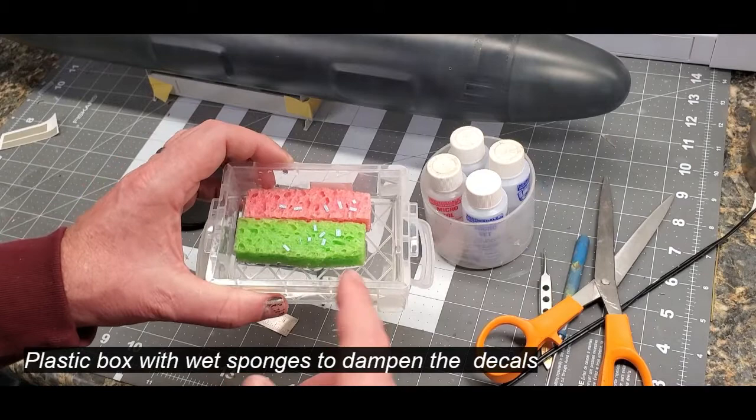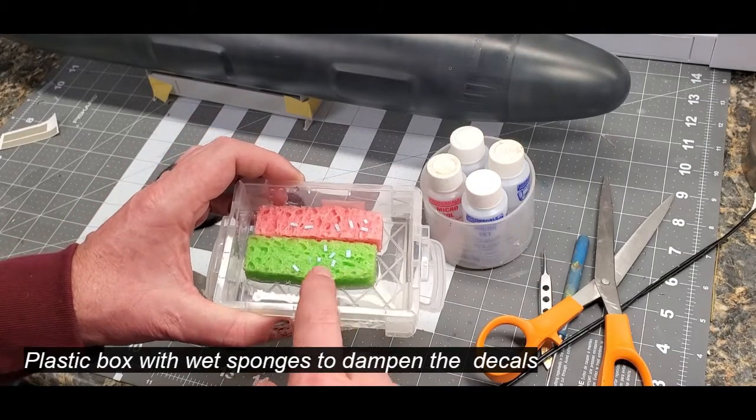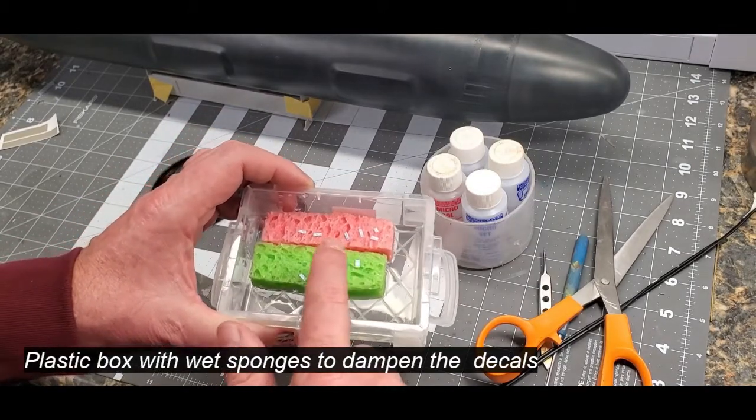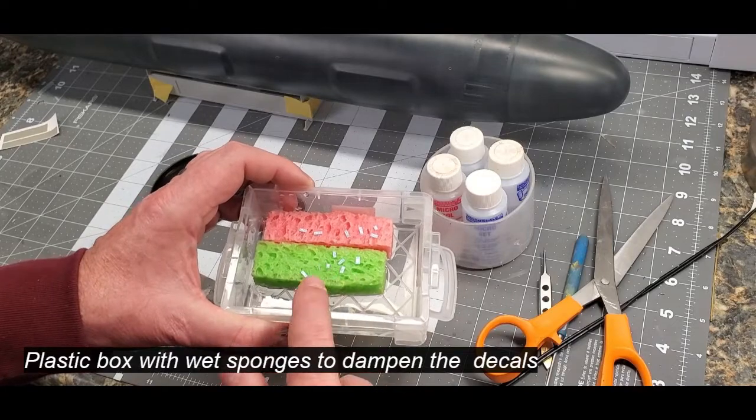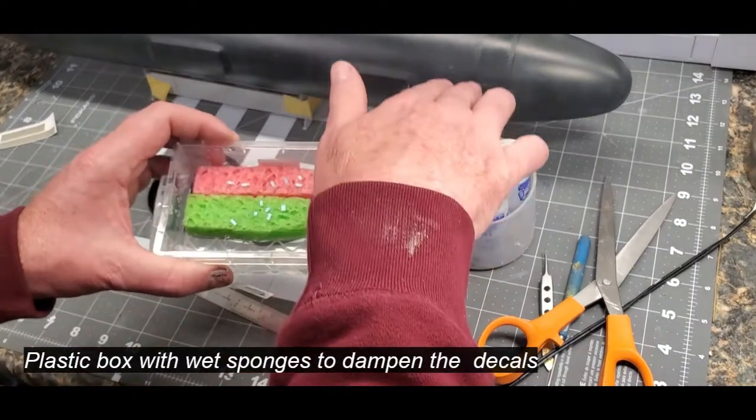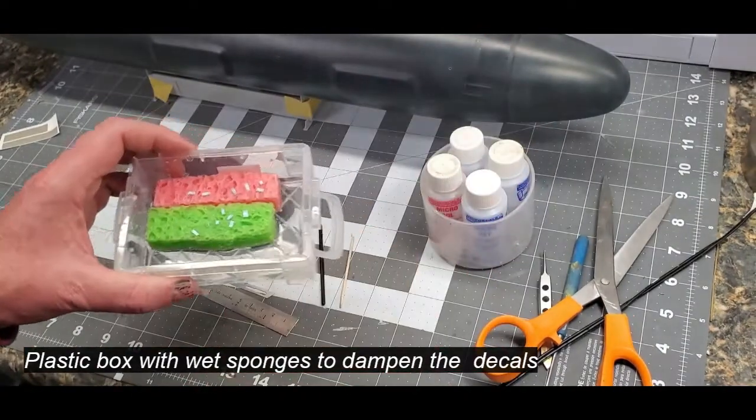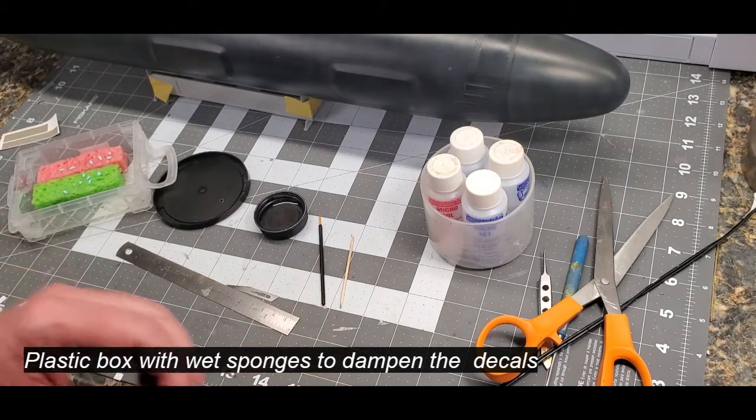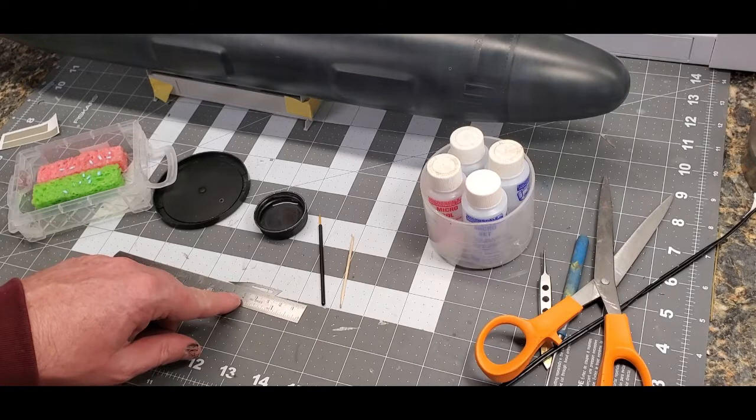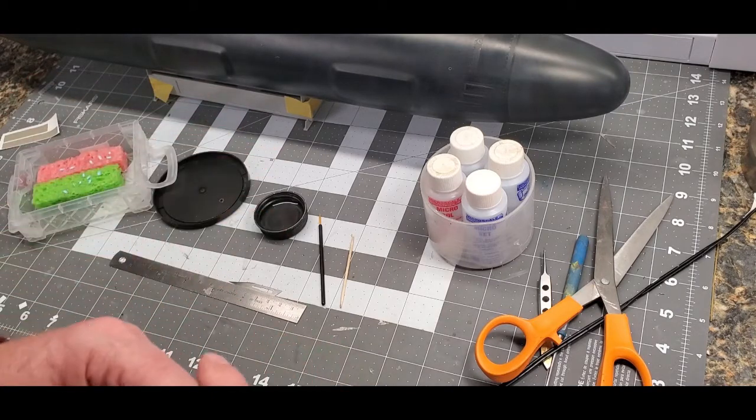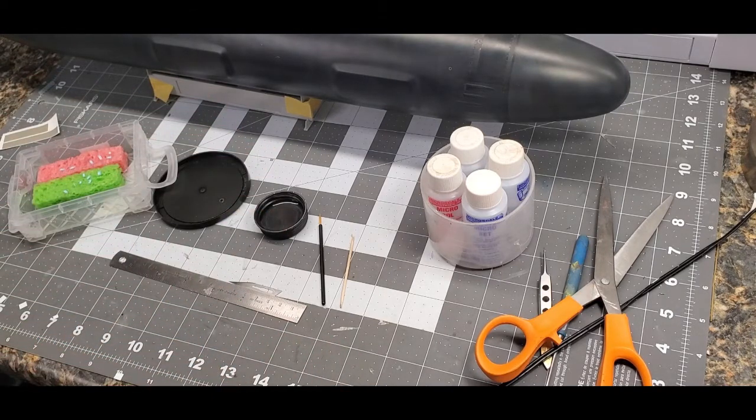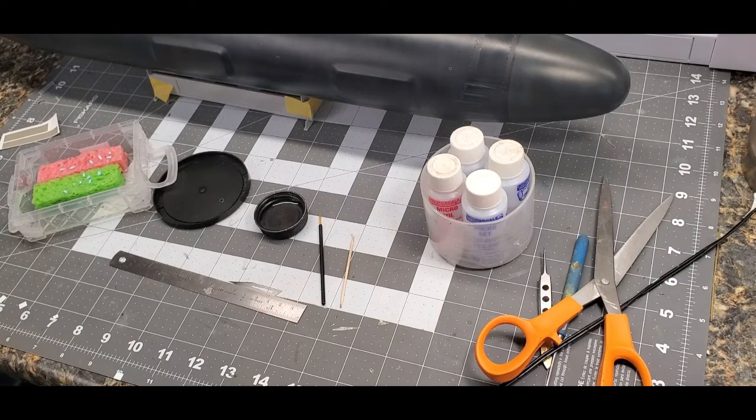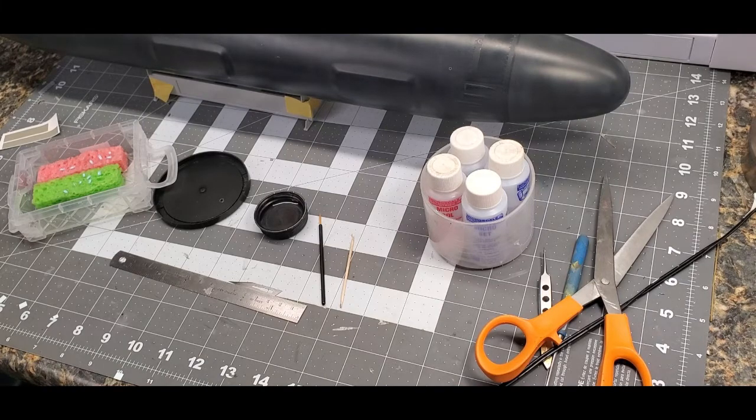This little contraption here is just a pencil box, a crayon box with a couple pieces of sponges in it. Sitting on the sponges are my decals that I've cut out, and those are the individual numbers to do one step. That's how we're going to do this—one at a time. From that decal sheet, I trimmed out all these numbers and now I'm simply going to put them on.